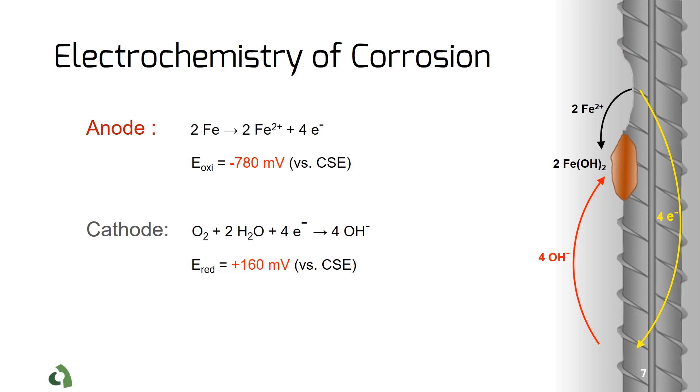For example, the reactions in the anode where steel loses electrons can create a potential difference of negative 780 millivolts compared to a standard copper sulfate electrode. The cathodic reactions would result in a potential difference of positive 160 millivolts.